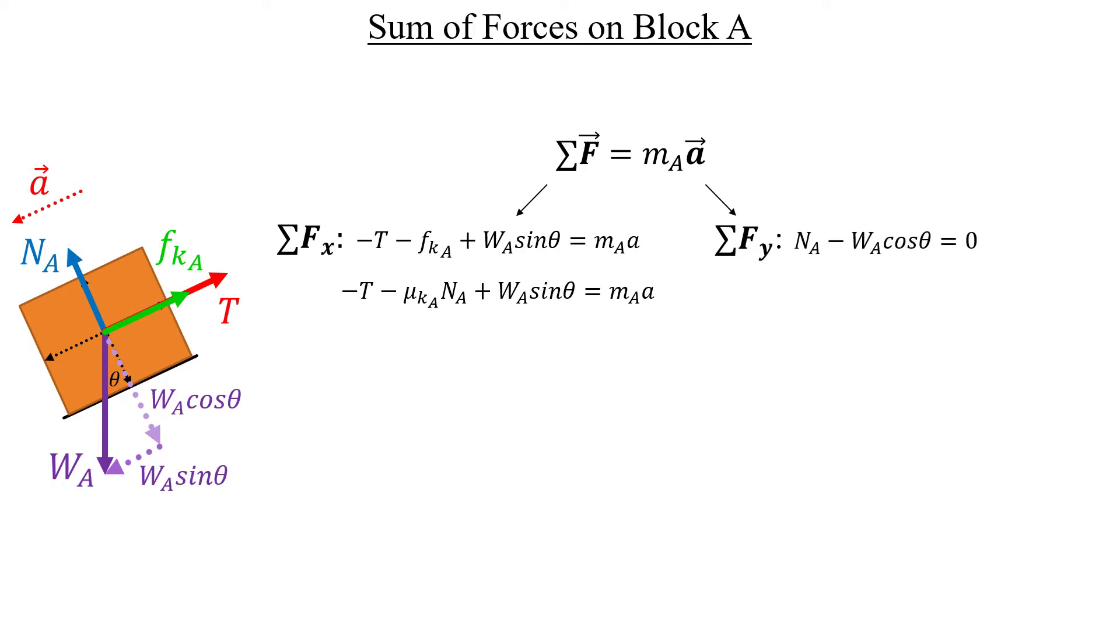So let's jump over to the direction to see if we can get some clarity here. Things are fairly easy in the y direction. Block A does not leave the ramp, so there's no acceleration. And we can just take this negative term here and move it over to the other side, and we get an expression for free for the normal force of the ramp acting on A. Let's go ahead and take what that is equal to and plug it in over here. But we can't go any further. We weren't given any details about the tension, and we still need to solve for the acceleration. So therefore, let's underline this equation and come back to it in a bit.